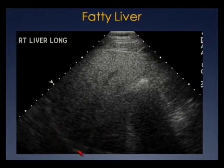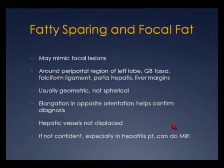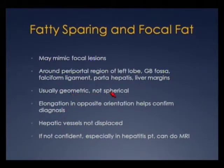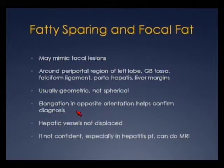We lose any vascular definition and we don't see the diaphragm well. Fatty sparing and focal fat may mimic liver lesions, and we typically see these around the periportal regions of the left lobe, gallbladder fossa, falciform ligament, porta hepatis, and liver margins. Fatty sparing and focal fat are usually geometric, not spherical, and if you scan from the opposite plane it should elongate — this helps differentiate these entities from a liver mass.